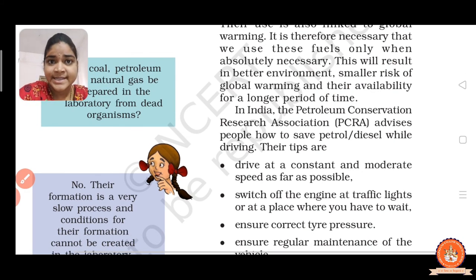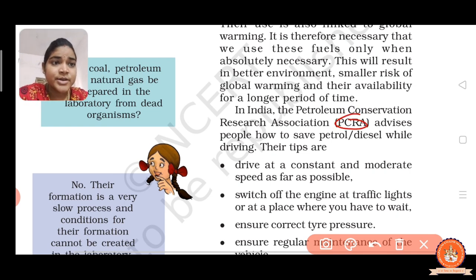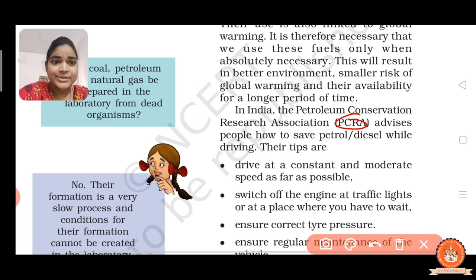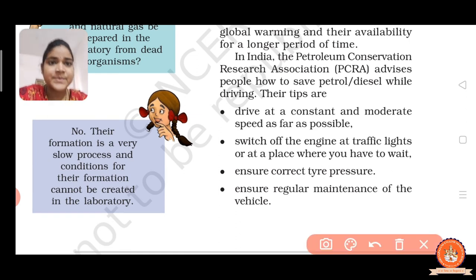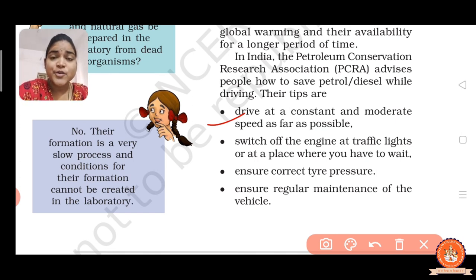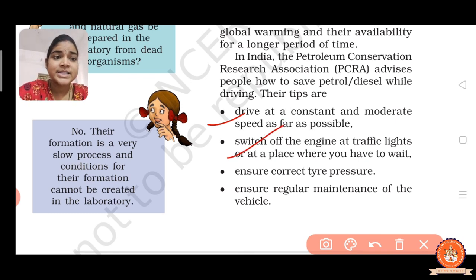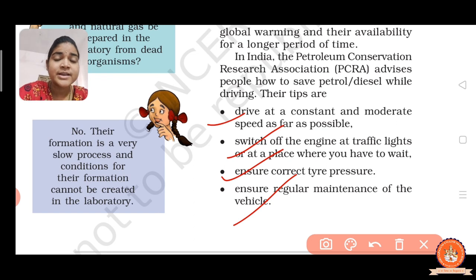In India, the Petroleum Conservation Research Association — PCRA — advises people on how to save petrol and diesel while driving. The tips are: drive at a constant and moderate speed as far as possible; switch off the engine at traffic lights or at a place where you have to wait; ensure correct tire pressure; and ensure regular maintenance of the vehicle.